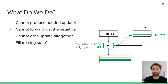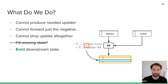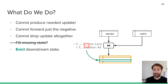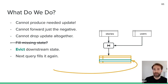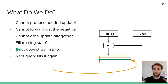Partial state gives us the mechanism to solve this: eviction. We don't know what the author for story 7 now is, but we can communicate that downstream with an eviction — evicting story 7 from the downstream materialized view. Then when a later query comes in for 7, the normal upquery flow populates the required state. The system can detect incongruent joins and only send evictions in cases where necessary.